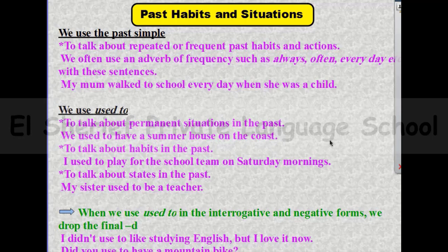We also use 'used to' to talk about habits in the past — for example: I used to play for the school team on Saturday mornings — and to talk about states in the past — for example: my sister used to be a teacher. In interrogative and negative forms, we drop the final 'd': I didn't use to like studying English, but I love it now.